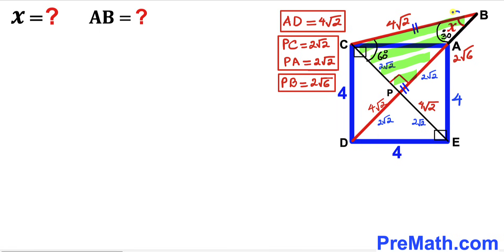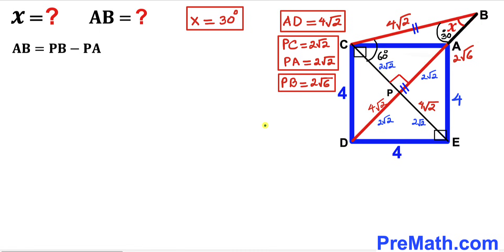We've determined that angle X = 30 degrees. Now our task is to calculate the length of segment AB. We observe that AB = PB − PA.